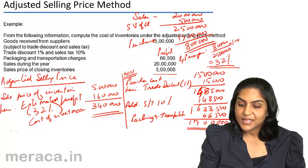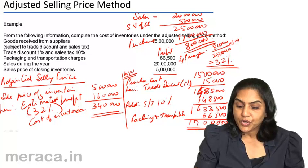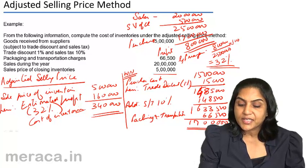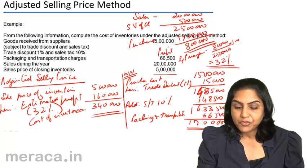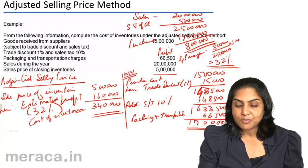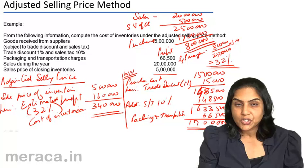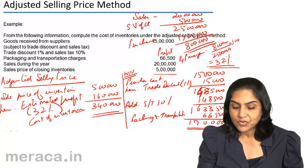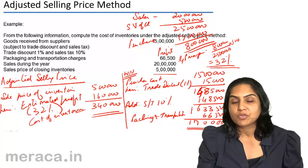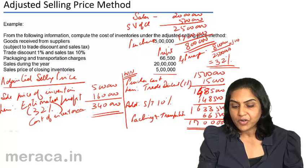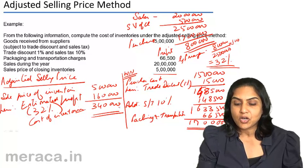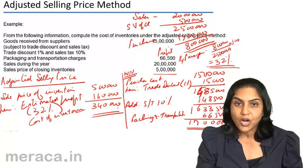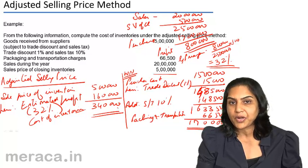In this example, we needed to compute the estimated profit. If the estimated profit is known, we reduce the estimated profit margin from the selling price of the inventories to arrive at the cost price. Inventory would be valued at this cost — it is called the adjusted selling price method.